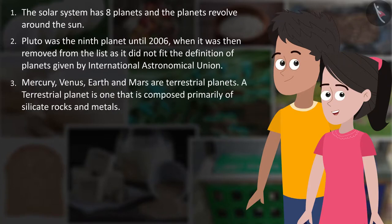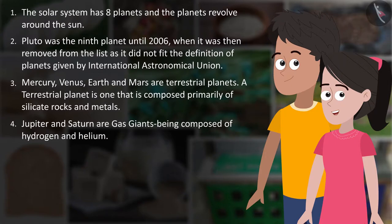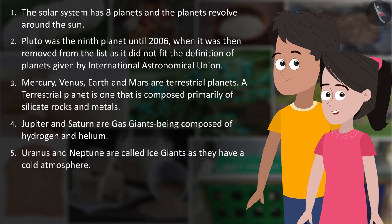Mercury, Venus, Earth and Mars are terrestrial planets. A terrestrial planet is one that is composed primarily of silicate rocks and metals. Jupiter and Saturn are gas giants, being composed of hydrogen and helium. Uranus and Neptune are called ice giants as they have a cold atmosphere.